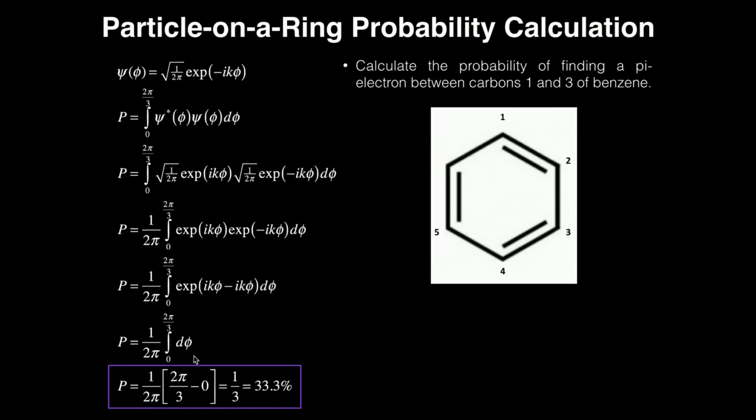Now, that's basically one over two pi times two pi over three. Notice the pi's cancel, the two's cancel, and your probability is one-third, which as a percentage would be 33.3 repeating percent.